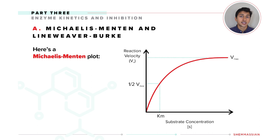First, Vmax is the fastest speed at which the given enzymes can work. In other words, this is the fastest that the enzymes can convert substrate to product. Second, Km is the concentration of substrate at one-half Vmax.